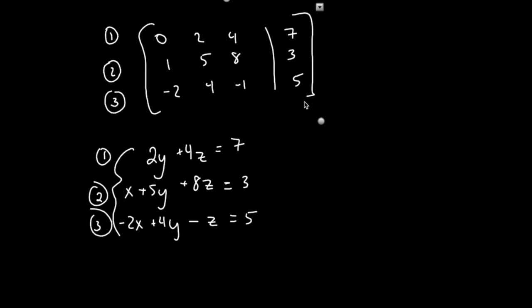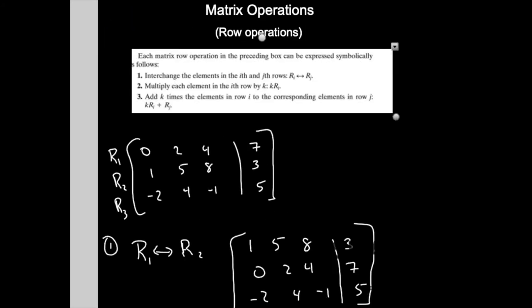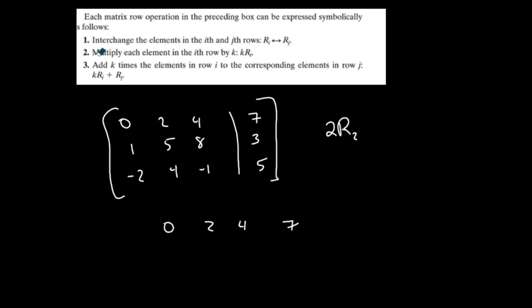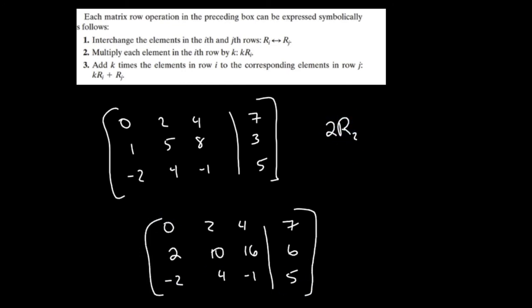The second operation allowed is multiplying each element in a row by a constant k. For example, 2R2 means take row two and multiply every element by the constant two. Row one stays the same. Row two becomes two, ten, sixteen, and six — everything doubled. Row three stays the same. The notation tells you which row is being multiplied and by what constant.